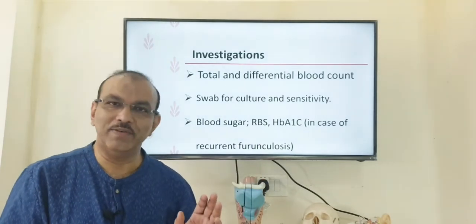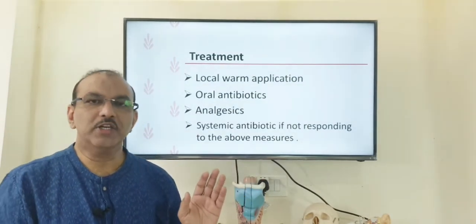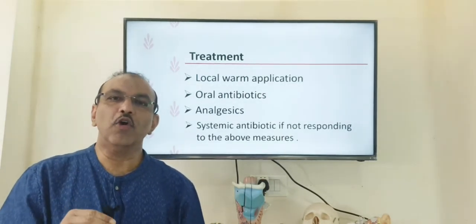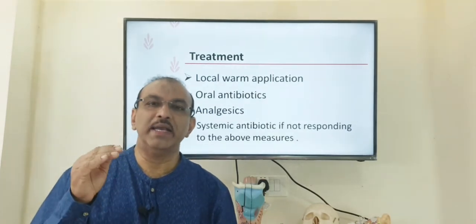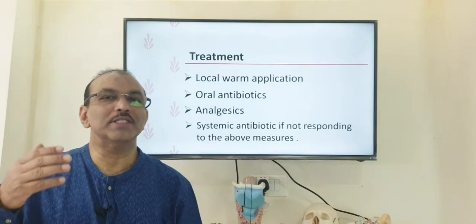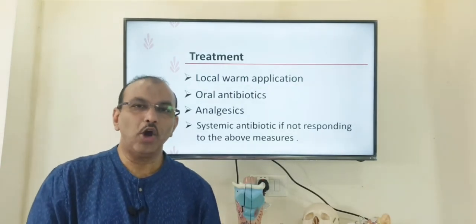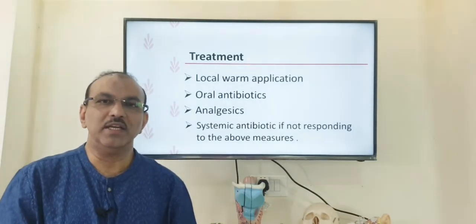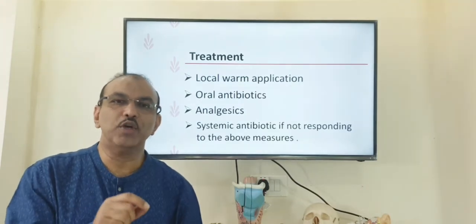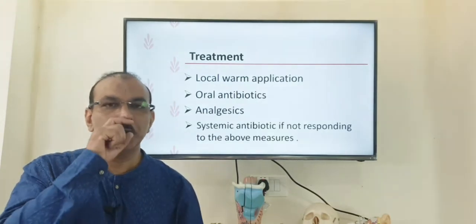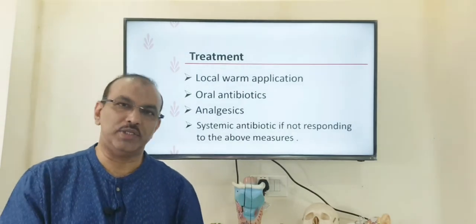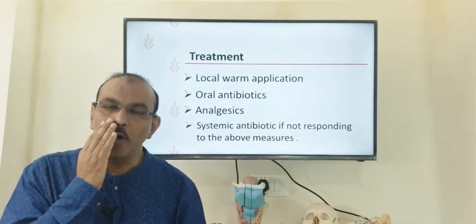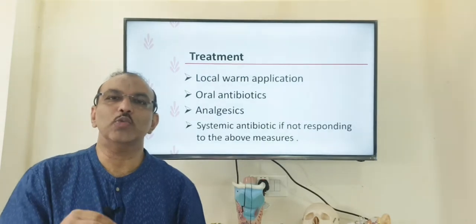For treatment, we would like to start an oral antibiotic — a higher antibiotic — for five to seven days. I will explain shortly why a higher antibiotic and a longer duration are needed. Along with that, a painkiller is also given. If the patient happens to be in an immunocompromised state, they must be admitted and given a full IV course of antibiotics to control the disease and prevent complications.